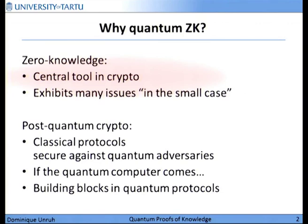Most of you will probably agree that considering zero knowledge is an interesting thing. It's a central tool in crypto, and not only that — many things that appear in crypto, like rewinding and concurrency, all the problems pop up there first and then you get them in more complex settings like multi-party computation.